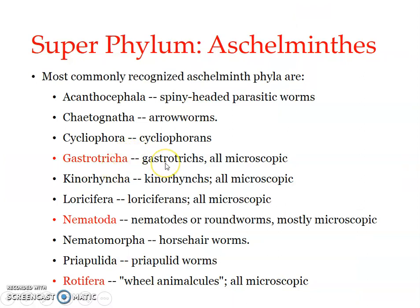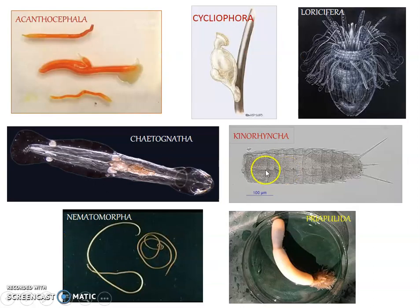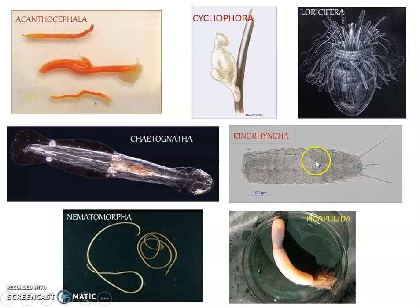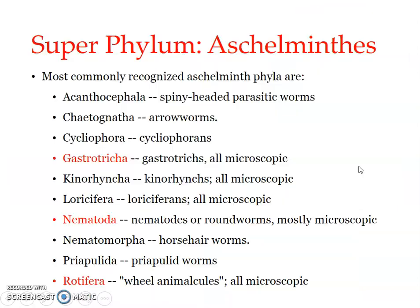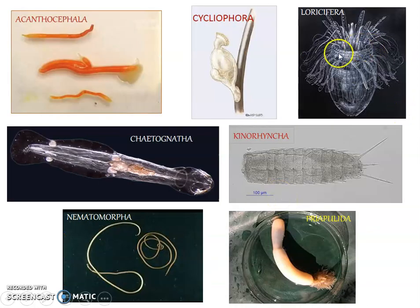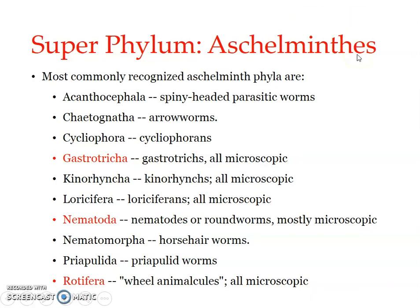Gastrotricha we will be learning in detail — all are microscopic free-living groups. Then we have Kinorhyncha — also microscopic, about 100 micrometers in length — and they are externally segmented in appearance, seeming to be segmented. Then we have Loricifera — again microscopic — with a very unique structure.